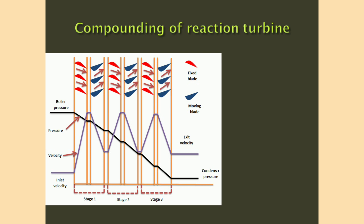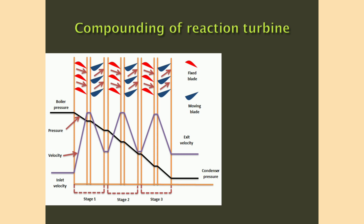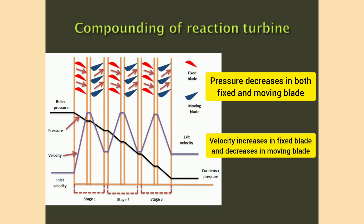Compounding of reaction turbines: reaction turbines use fixed and moving blades only — no nozzles are provided. The fixed or guide blade functions as a nozzle and directs steam to the moving blades. A three-stage turbine is shown in the figure, where each stage consists of a fixed and moving blade. Pressure decreases in both fixed and moving blades, as there is area variation and the blades are not symmetrical. Velocity increases in the fixed blade and decreases in the moving blade. The pressure and velocity variation is shown in the figure.